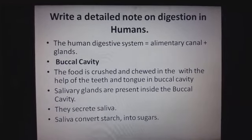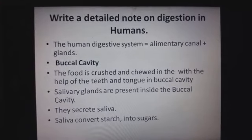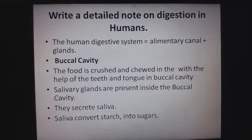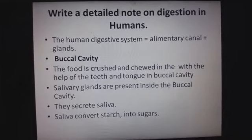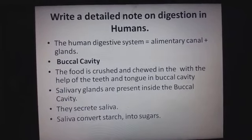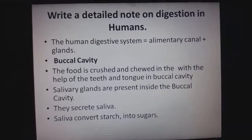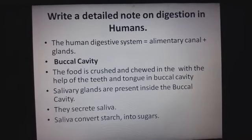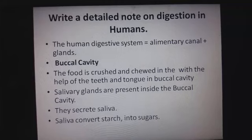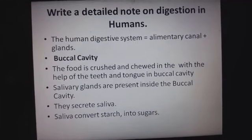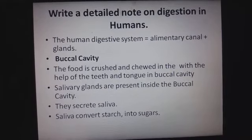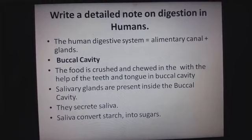Starting from the mouth, we have the salivary gland. Moving ahead, we have the largest gland of the body — the liver — which secretes bile juice. Then we have the pancreas. So there are three major glands concerned with the digestive system: first, the salivary gland; second, the liver; and third, the pancreas.